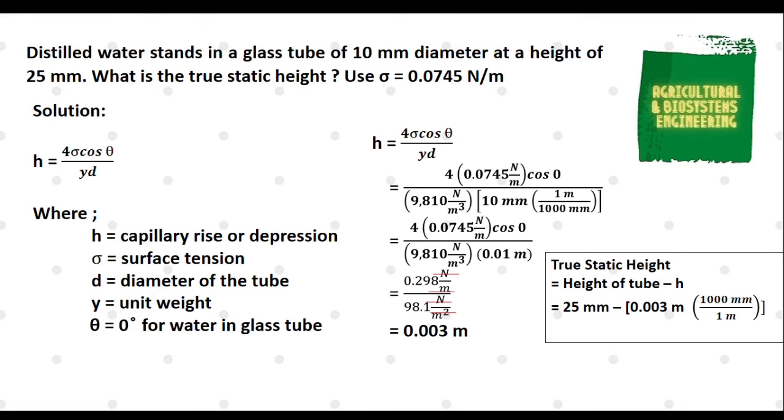However, we have to convert first the meter unit into millimeter using the conversion factor 1 meter equals 1000 mm. We now have 25 mm minus 3 mm which is equal to our final answer of the true static height of 22 mm.